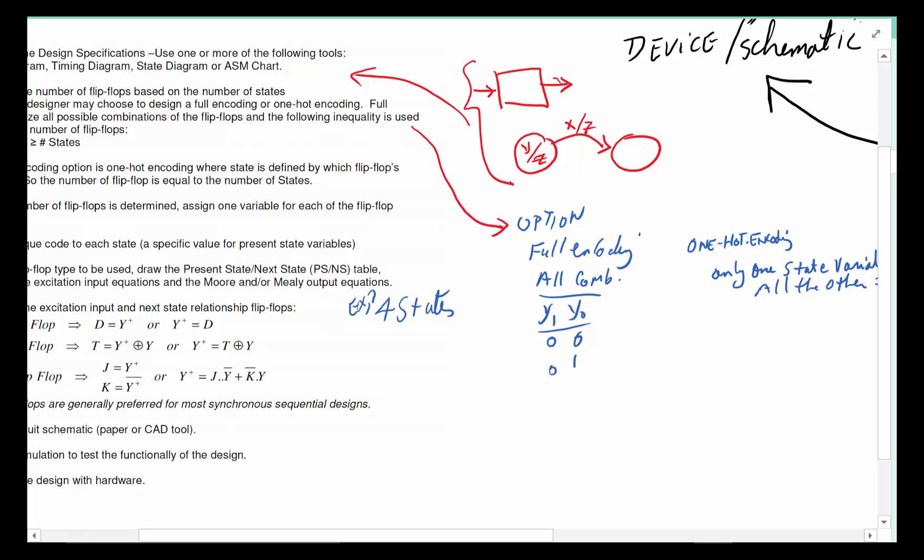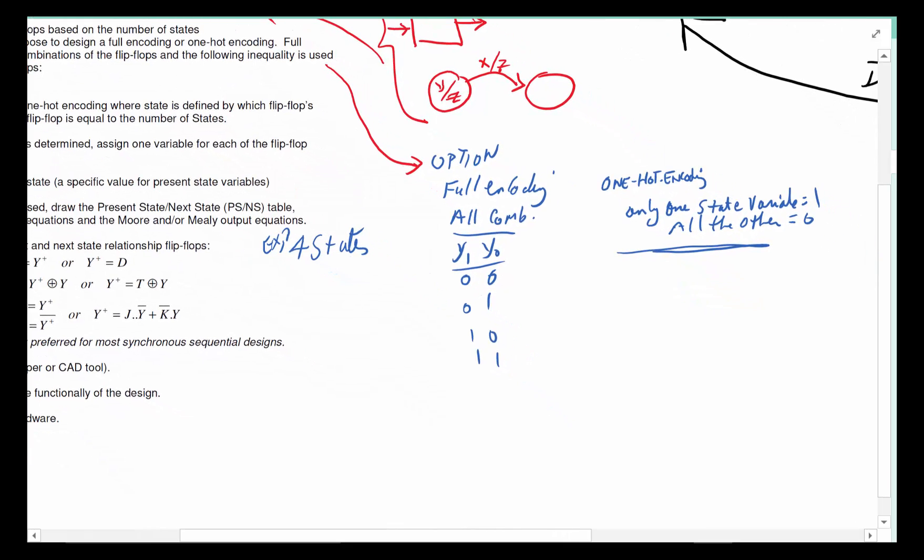If I'm doing full encoding, I'm going to have two state variables, right? Two to the power of two gives us four, so I will have Y1, Y0. One state can be 00, another 01, another 10, another 11. But in the case of one-hot encoding, I have to have four flip-flops. I have to have as many flip-flops as I have states, because each state is represented by one flip-flop output being high, all the others being zero. So the possible cases are 0001, 0010, 0100, and 1000.